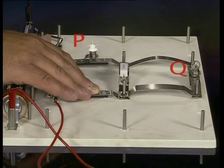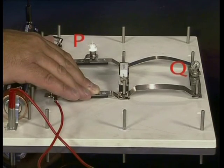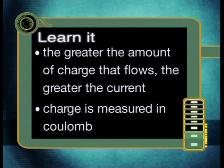Lightbulb P glows brighter than Q because a greater current passes through P than through Q. What we have learned from our investigation is that the greater the amount of electrical charge that flows through the circuit every second, the greater the electric current. Make sure that you learn this: the greater the amount of charge that flows per second, the greater the current. We use a unit of measurement called the Coulomb to measure charge. So when a large current passes through a lightbulb, this means that there are more Coulombs of charge passing through that lightbulb in one second. Lightbulb P was brighter than lightbulb Q, so obviously there were more Coulombs of charge passing through lightbulb P in one second as compared to Q.